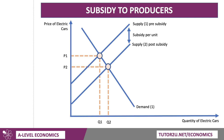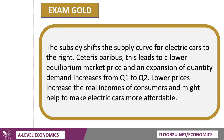So there's the basics of a subsidy: it shifts the supply curve out, lowering manufacturing costs, causing market prices to fall, and there's an expansion along the demand curve. The subsidy shifts the supply curve of electric vehicles to the right. Ceteris paribus — other things being the same — this leads to a lower price and an expansion of quantity demanded from Q1 to Q2. Lower prices, of course, increase the real incomes of consumers and help make electric cars more affordable.